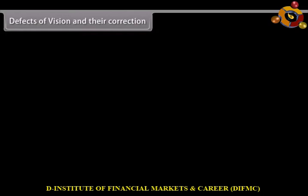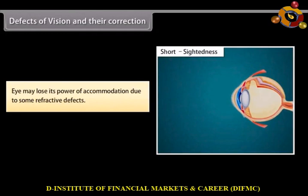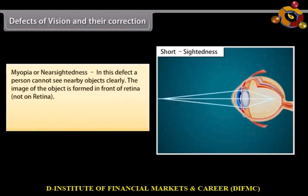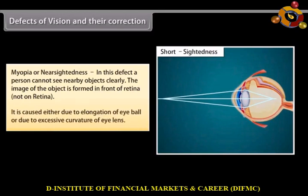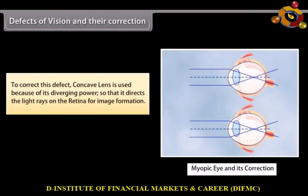Defects of vision and their correction. The eye may lose its power of accommodation due to some refractive defects. There are three such defects. Myopia or near-sightedness — in this defect, a person cannot see distant objects clearly. The image of the object is formed in front of the retina. It is caused either due to elongation of the eyeball or due to excessive curvature of the eye lens. To correct this defect, a concave lens is used because of its diverging power, so that it directs the light rays on the retina for image formation.